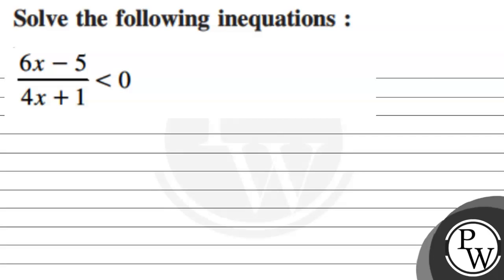Hello. Let us first read the question. The question says solve the following inequality. The given inequality is 6x minus 5 divided by 4x plus 1 less than 0.